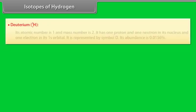Deuterium: Its atomic number is 1 and mass number is 2. It has one proton and one neutron in its nucleus and one electron in its 1s orbital. It is represented by symbol D. Its abundance is 0.0156%.